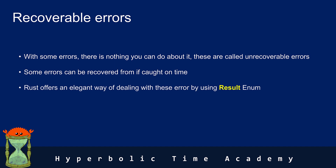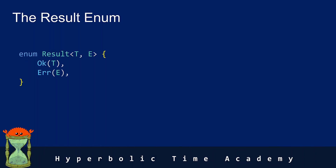The result enum is a powerful enum that helps us handle errors gracefully without crashing our program. By understanding and using the result enum, you'll write more robust and error-tolerant code. Now let's dive into the syntax.